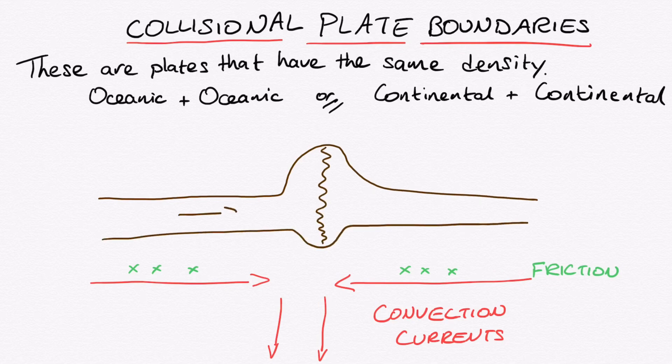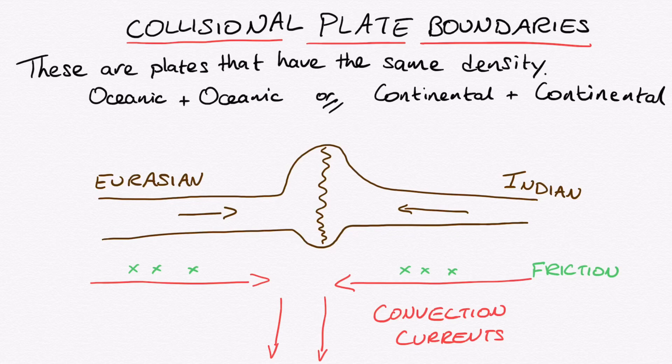In the example I've given here I've put down the Eurasian and the Indian plate. This is one of the main examples of a collisional plate boundary, however there are also others.